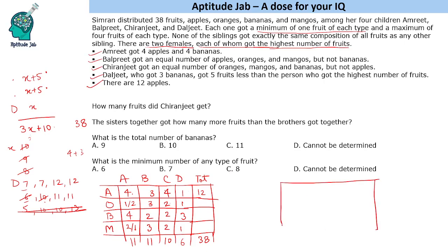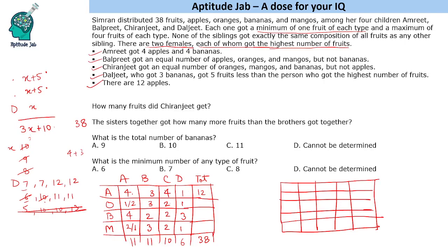In the case where Daljeet's total is 7 — with 3 bananas, we need 4 more fruits from 3 remaining types — the only possibility is a distribution like 3, 1, 1, 2 or similar. Amrit still has 4 apples and 4 bananas. Balpreet has A, A, A for apples, oranges and mangoes. Two people should total 12 each. If we try A equals 1, Balpreet's total is 3 plus banana count.